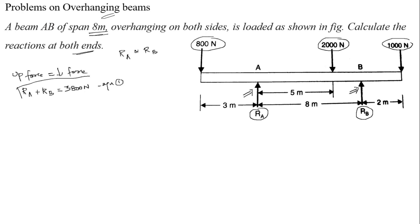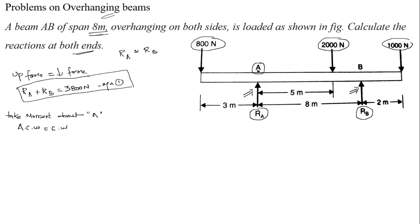We got equation 1: RA plus RB equals 3800. Now we want to take moments. Take moment about any point — we are going to take moment about point A. With respect to point A, the 800 N force is acting in the anticlockwise direction, while 2000 N and 1000 N act in the clockwise direction, and RB acts in the anticlockwise direction.